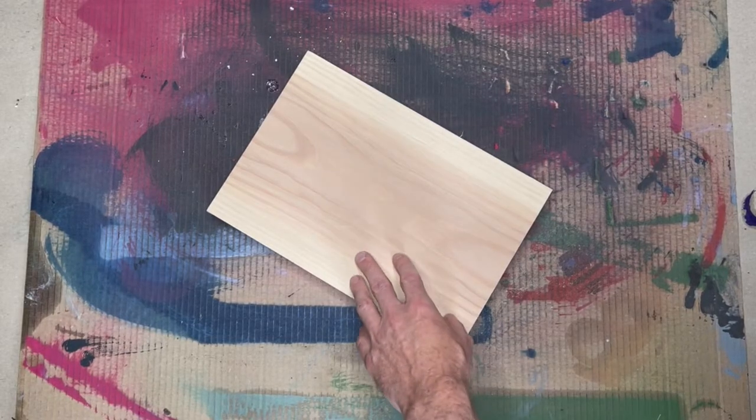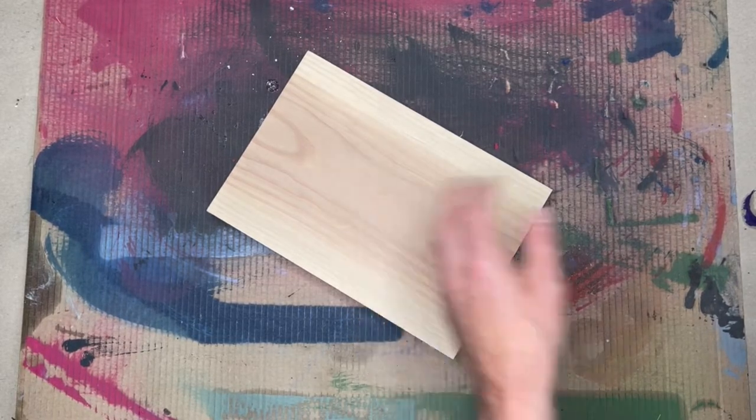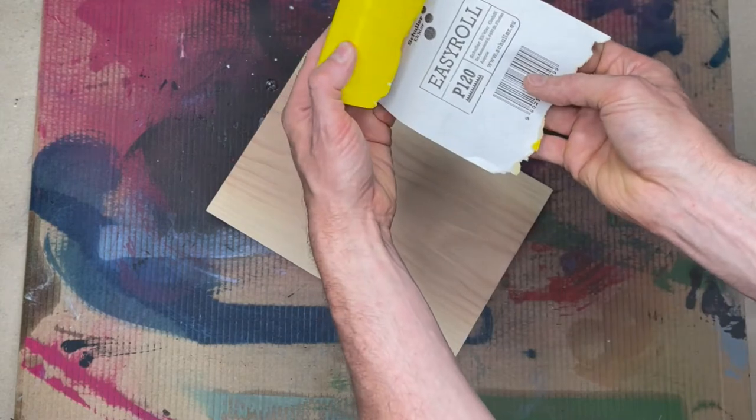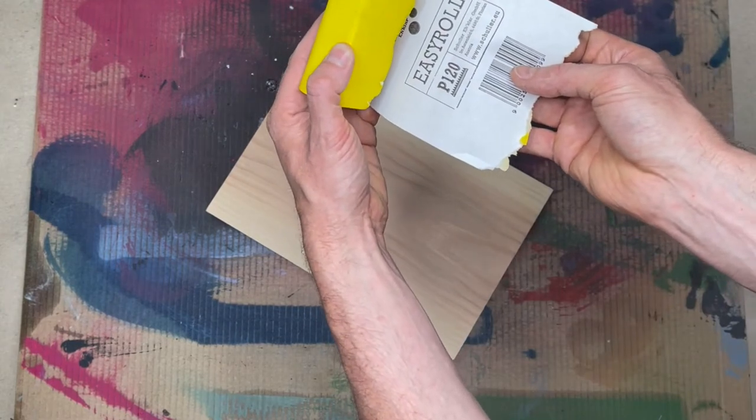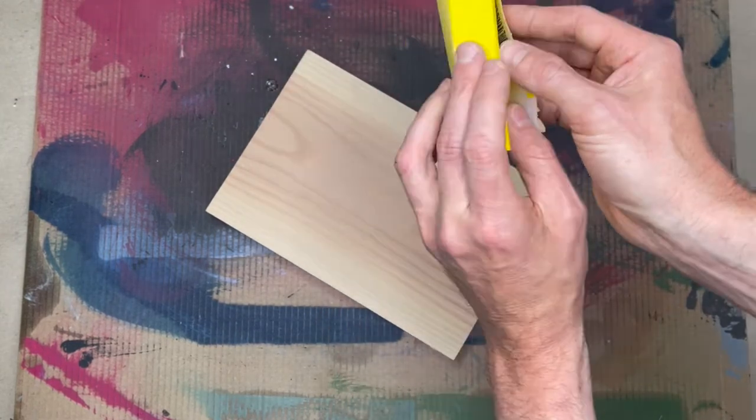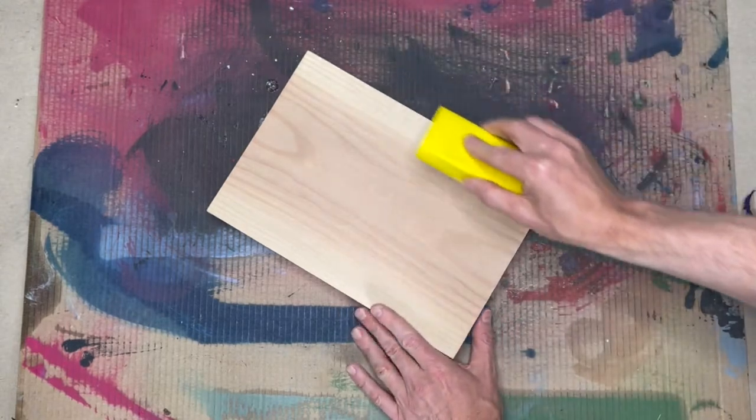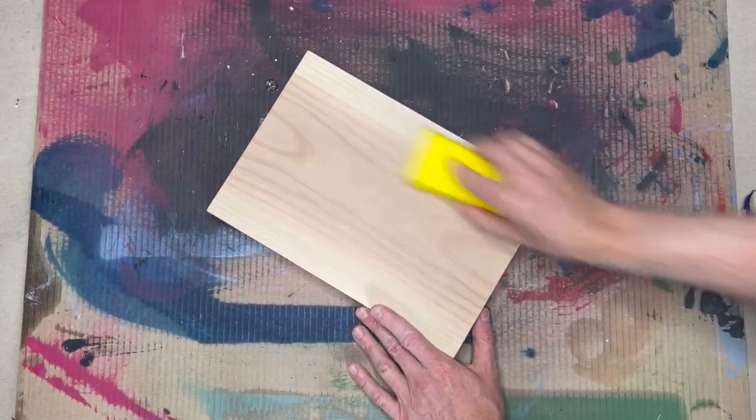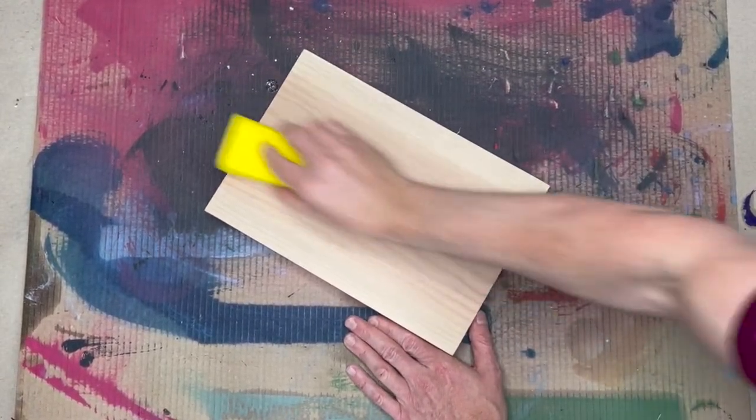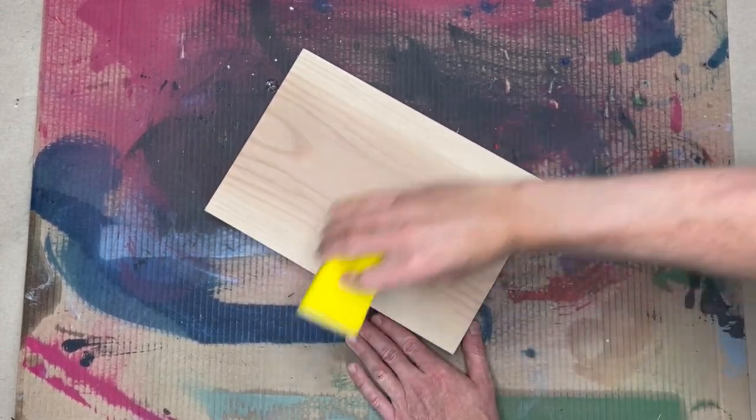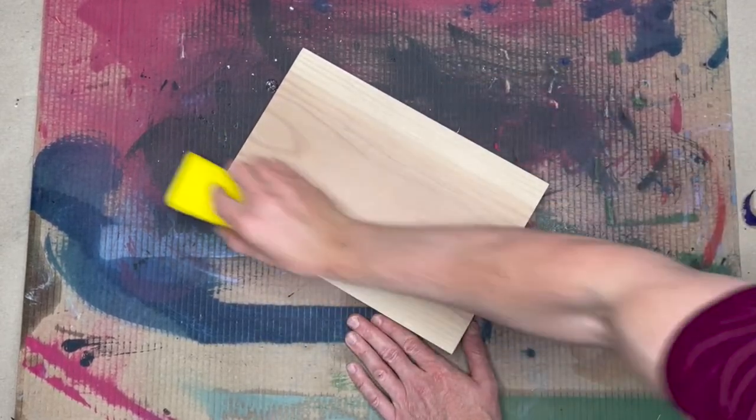So now the surface is dry again and it's time for sanding. You have to use a grit 120 for your job and be very thorough in what you do here. Sand quite well. Always sand in the direction of the veins. Never across the veins but always this way.